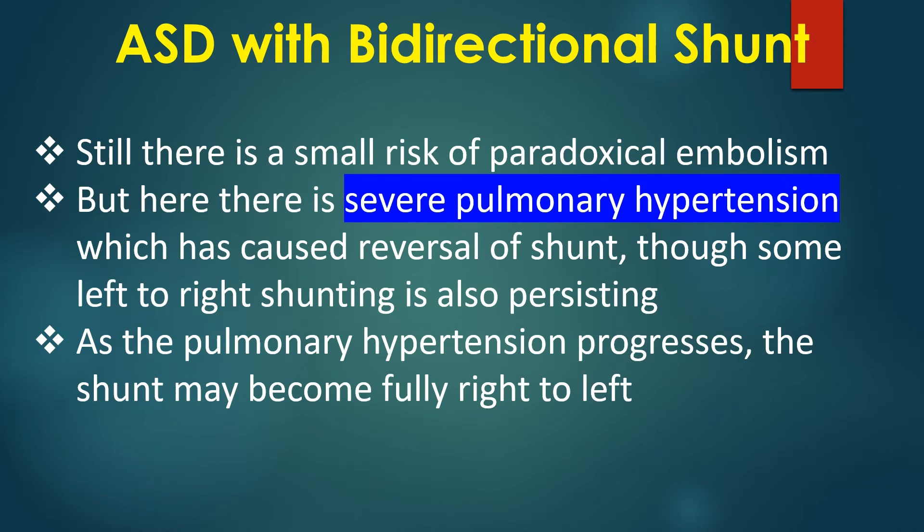Here there is severe pulmonary hypertension which has caused reversal of the shunt, though some left-to-right shunting is also persisting. As the pulmonary hypertension progresses, the shunt may become fully right-to-left.